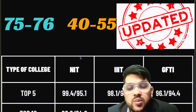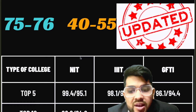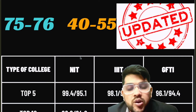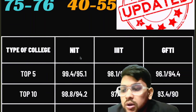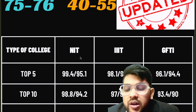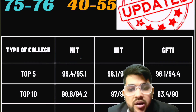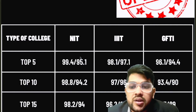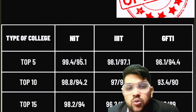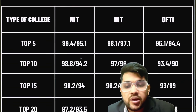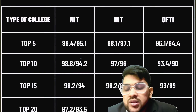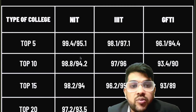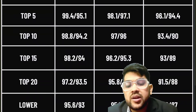For IIIT top 5: 98.1 for CS and 97.1 for EC. For GFTI top 5: 96.1 and 94.4. For top 10 NITs: 98.8 and 94.2. For top 10 IIITs: 97.9 and 96. For top 10 GFTIs: 93.4 and 90. For top 15 NITs: 98.2 and 94. For top 15 IIITs: 96.2 and 95.3. For top 15 GFTIs: 93 and 89. For top 20 NITs: 97.2 and 93.5. For top 20 IIITs: 95.8 and 95. For top 20 GFTIs: 91.5 and 88 percentile.